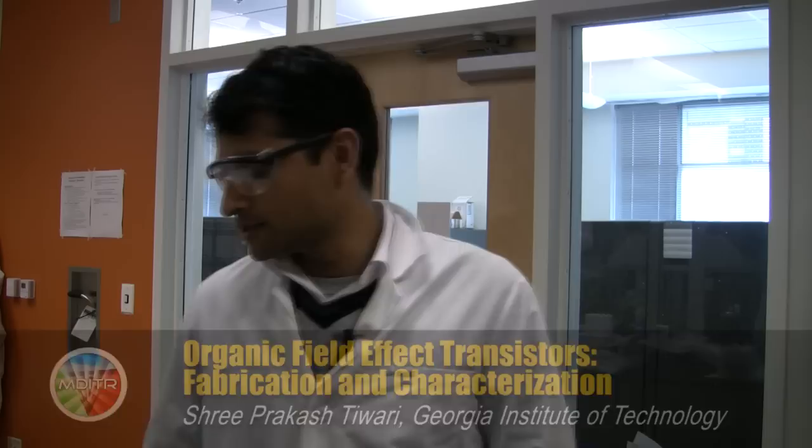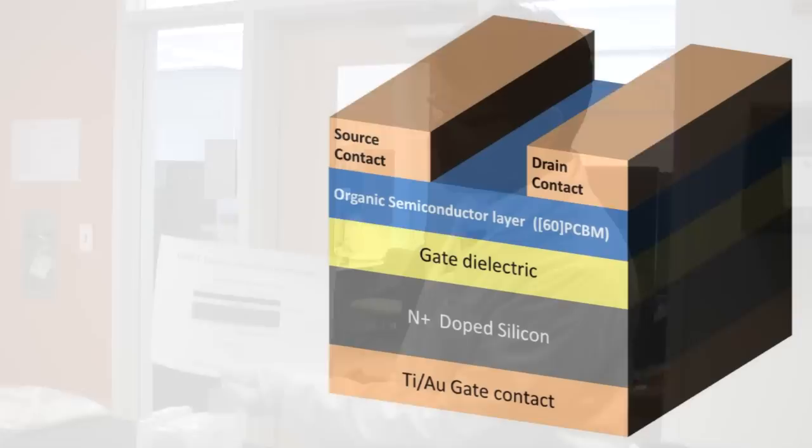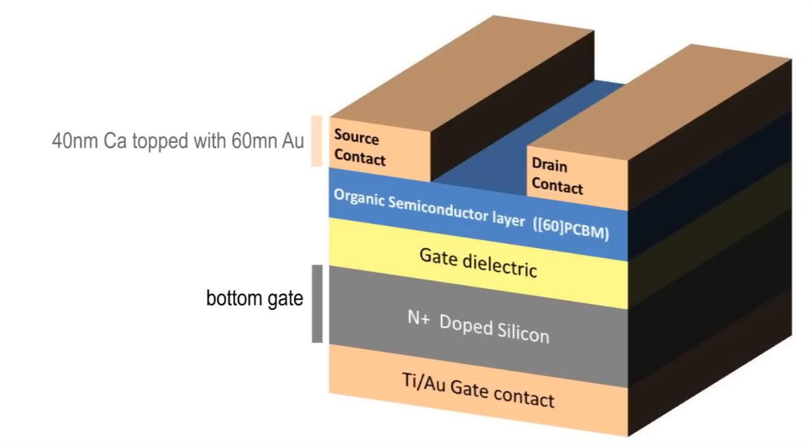So what I will talk about today is fabrication of top source-drain organic field effect transistors. Let me explain the device structure, which has top contact and bottom gate. The bottom layer is heavily doped N+ silicon, which acts as a gate. The first layer deposited on the bottom is gate contact, which is a titanium-gold layer, 2 nanometer or 5 nanometer titanium and 100 nanometer gold.